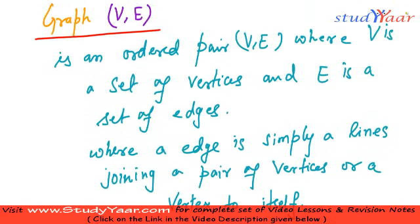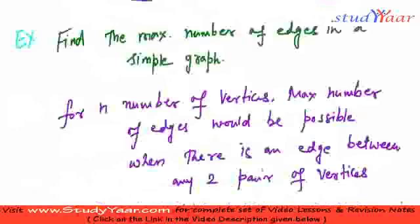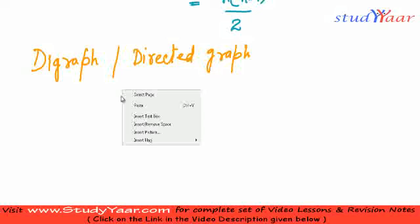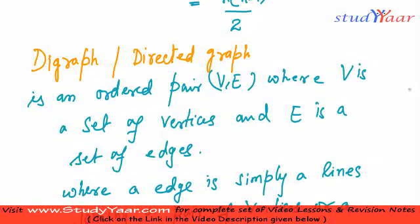So I am just going to copy this definition of graph and tell you what are the things that change. So I am pasting it over here and I am going to say it is an ordered pair (V, E) where V is the set of vertices and E is the set of directed edges.